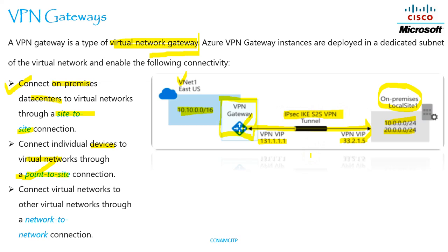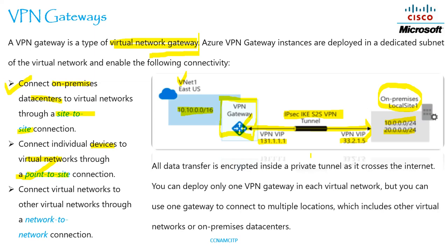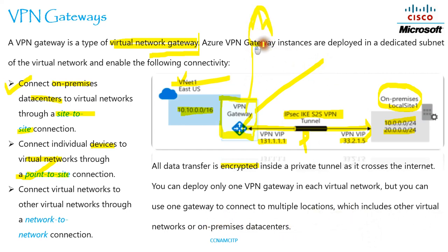This VPN gateway provides three types of connectivity: the first one is site-to-site, the next one is point-to-site, and the third one is network-to-network connection. All data transfer is encrypted inside a private tunnel as it crosses the internet. You can deploy only one VPN gateway in each virtual network, but you can use one gateway to connect to multiple locations — other virtual networks or on-premises data centers.